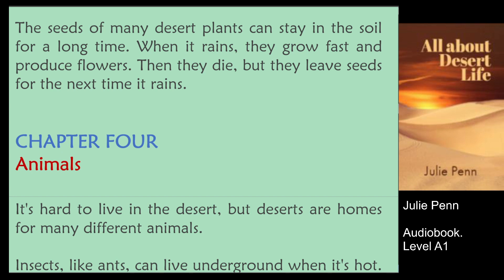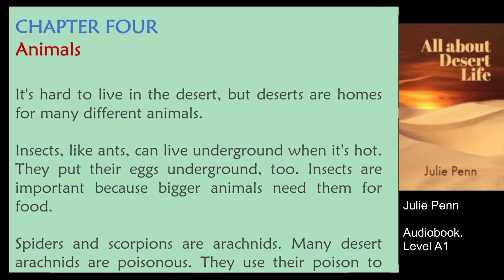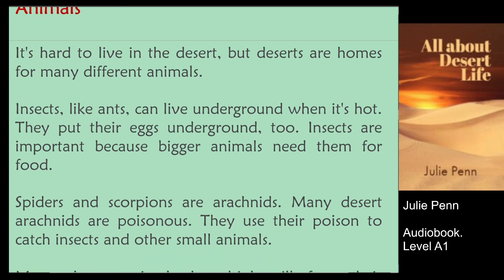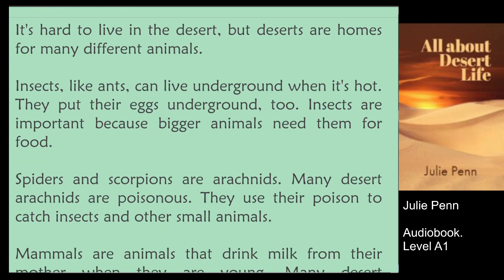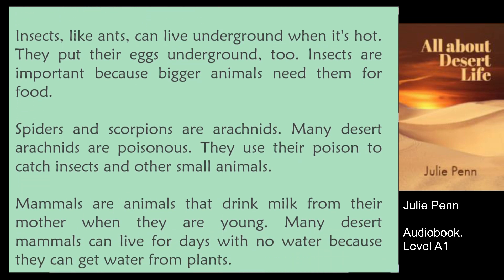Chapter 4: Animals. It's hard to live in the desert, but deserts are homes for many different animals. Insects, like ants, can live underground when it's hot. They put their eggs underground too. Insects are important because bigger animals need them for food. Spiders and scorpions are arachnids. Many desert arachnids are poisonous. They use their poison to catch insects and other small animals.